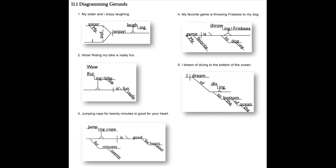Let's take a look at number five: 'I dream of diving to the bottom of the ocean' — a bunch of prepositional phrases in a row. 'I dream' is the subject and verb. How do I dream? 'Of diving.' The object of the preposition is a noun, and in this case it's a gerund. On the bottom step goes the -ing as always; 'div-' goes on the top step, followed by two more prepositional phrases.